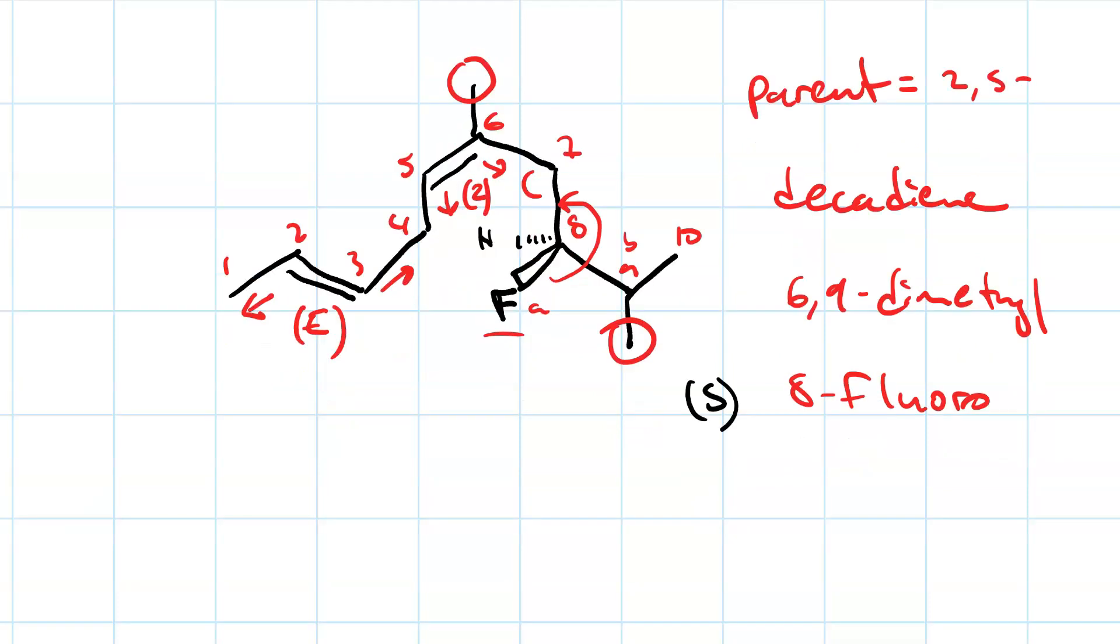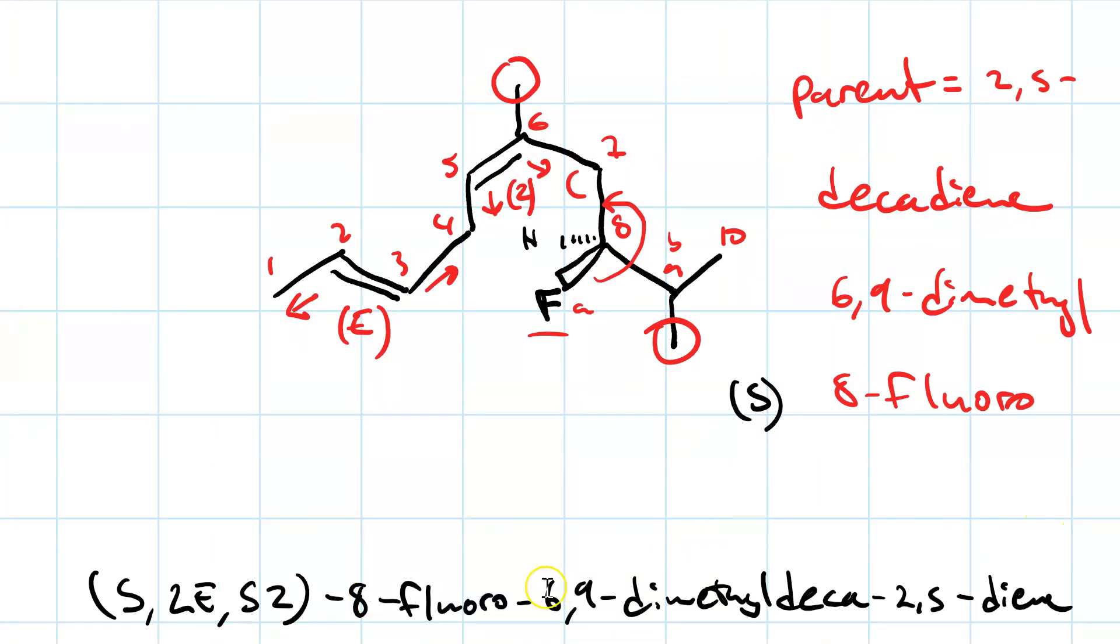So putting everything together, starting with the stereochemistry, it's (S)-2E,5Z-8-fluoro-6,9-dimethyldeca-2,5-diene. Or we could put the 2,5 in between methyl and deca.